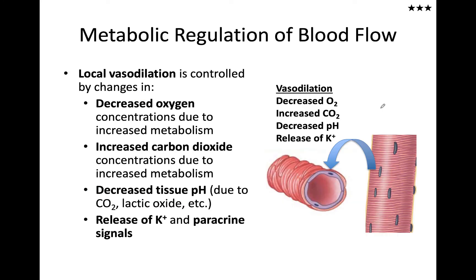The last topic for regulation of blood flow is the release of metabolic factors. As working skeletal muscle goes through the crossbridge cycle, it uses a tremendous amount of ATP. Creatine phosphate storage helps replace that ATP, but only for a finite amount of time. As oxygen decreases, it stimulates blood flow to that area by causing vasodilation.